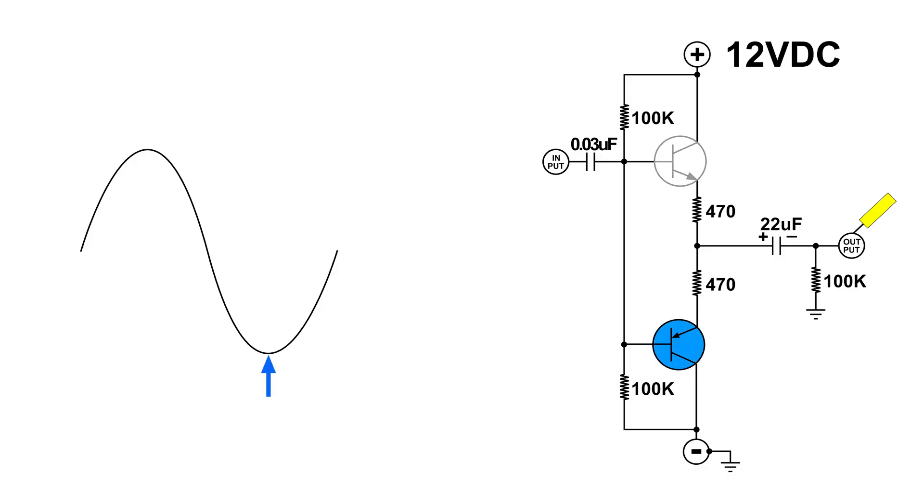the PNP transistor at the bottom will be conducting the most. And the NPN transistor at the top will be off or conducting very little. And of course, when we start heading less negative towards zero, the PNP transistor at the bottom will be conducting less. And the NPN transistor will start to conduct more.